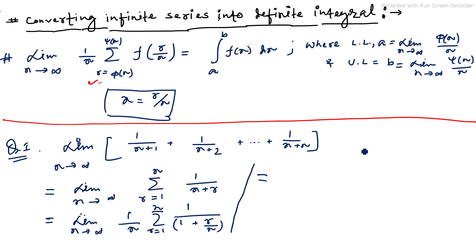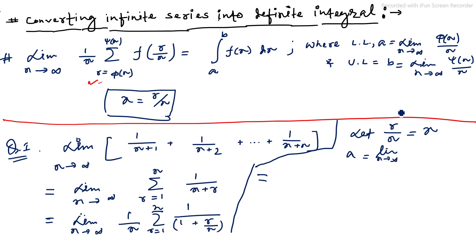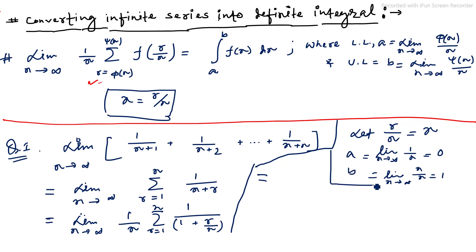Now let x equal r/n. Here the lower limit a equals limit n tends to infinity of φ(n)/n — since φ(n) = 1, this gives 1/n → 0 as n → ∞. And b equals limit n tends to infinity of ψ(n)/n = n/n = 1. So the definite integral has lower limit 0 and upper limit 1.